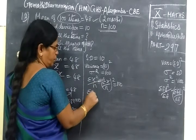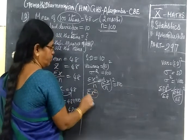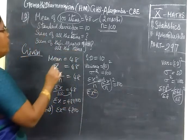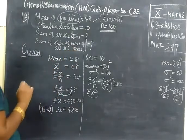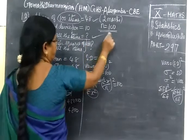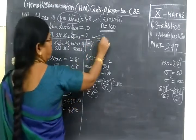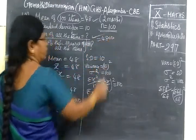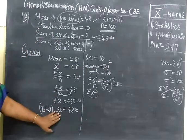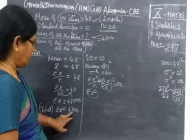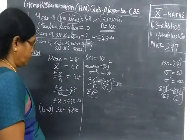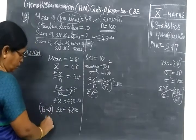So sigma X square, this is sum of the squares of all the items. Sum of all the items, the answer is 4800. Sigma means summation, added to get the total value. Here it is the total value.